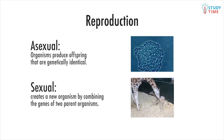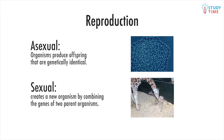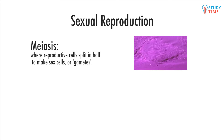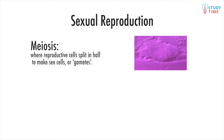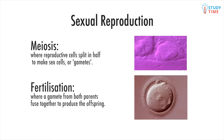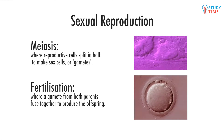Sexual reproduction has two important processes. Meiosis is the process where reproductive cells split in half to make sex cells or gametes. When they split, they split their chromosomes in half as well. Fertilisation is the process where a gamete from both parents fuses together, and the chromosome halves join together to produce full new chromosomes of the offspring.